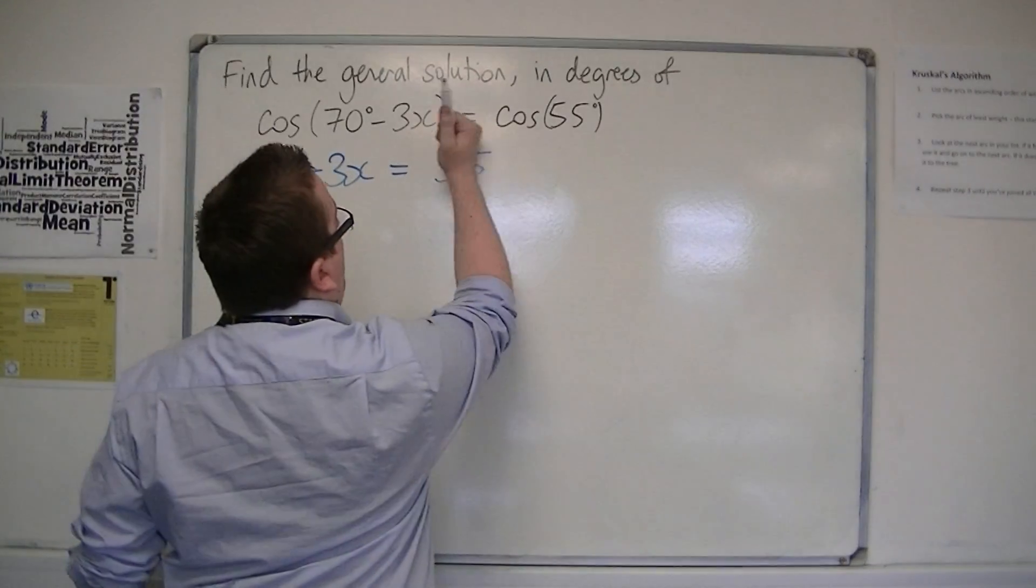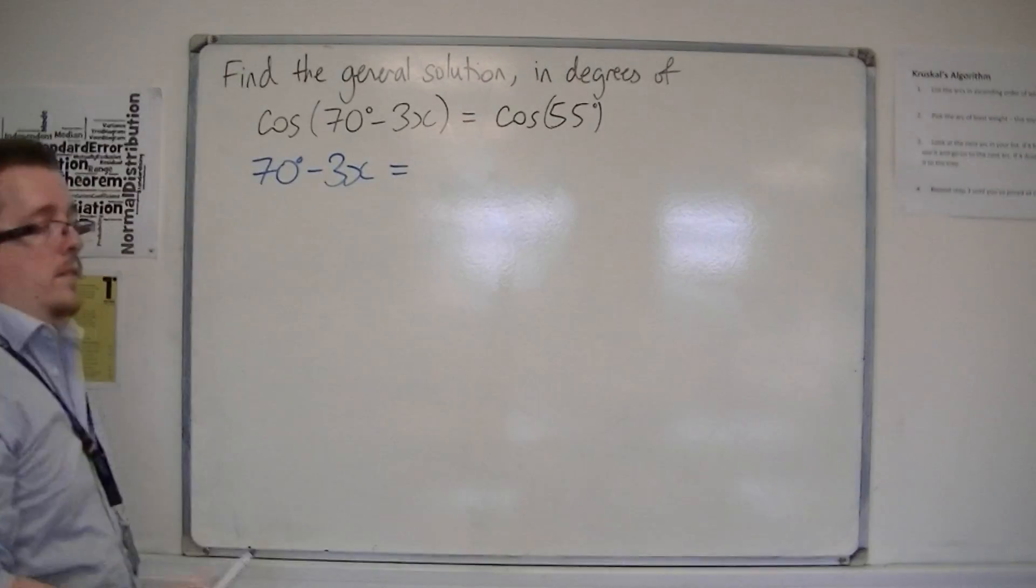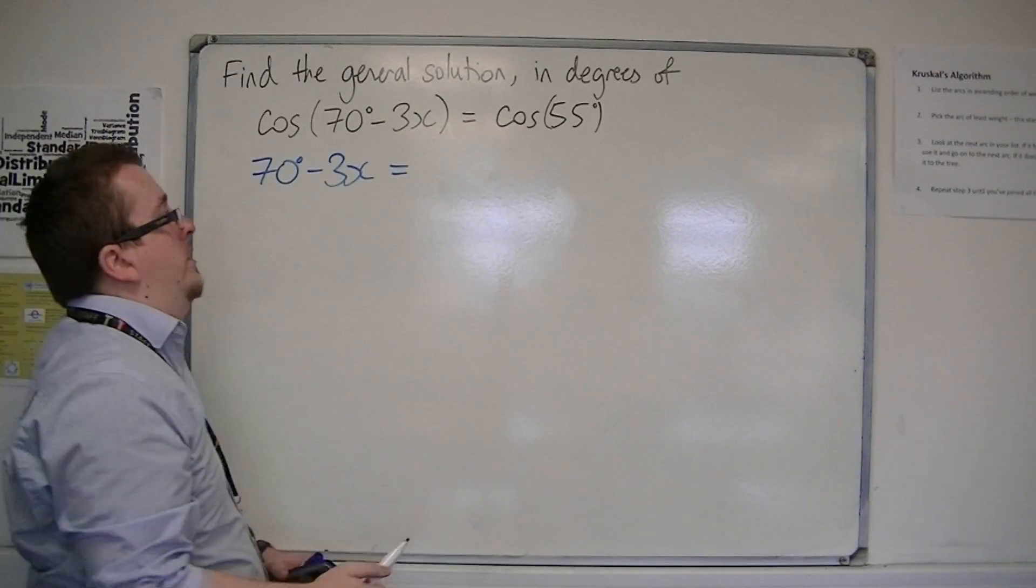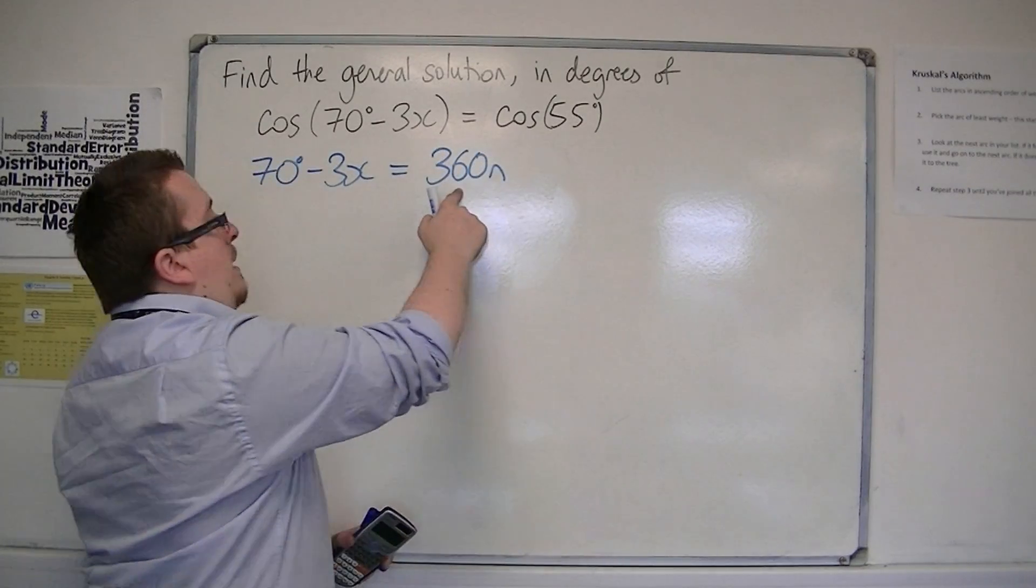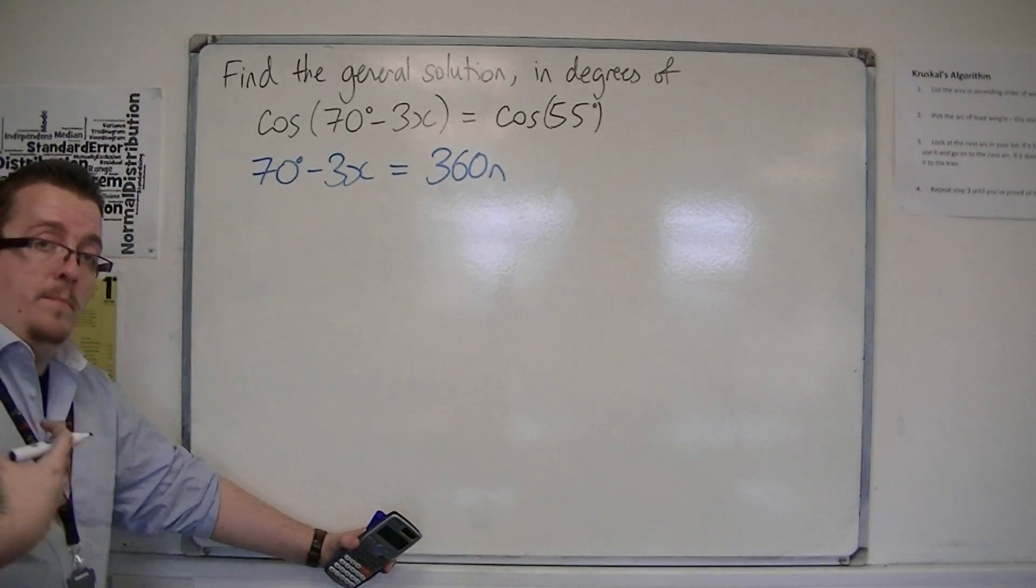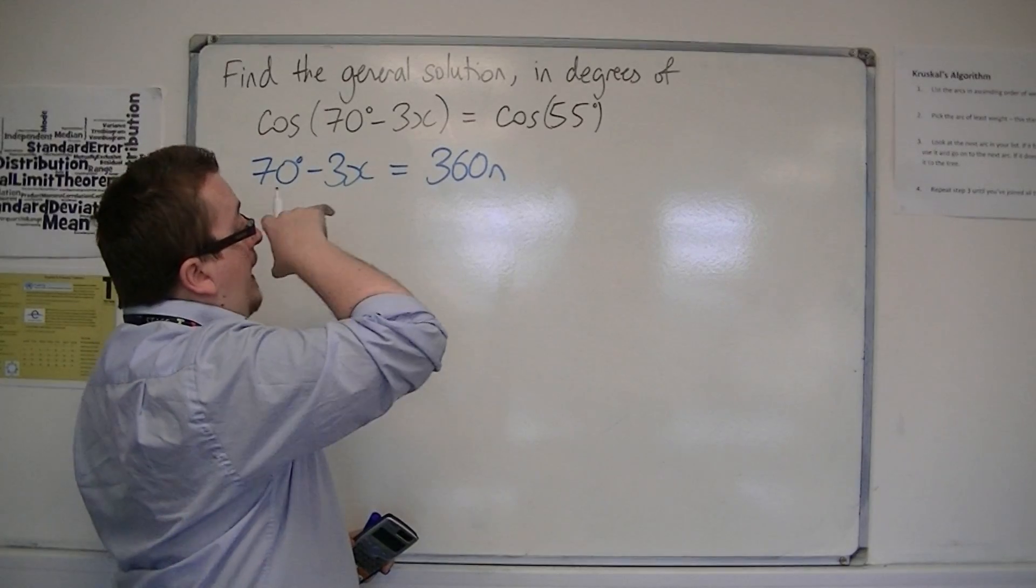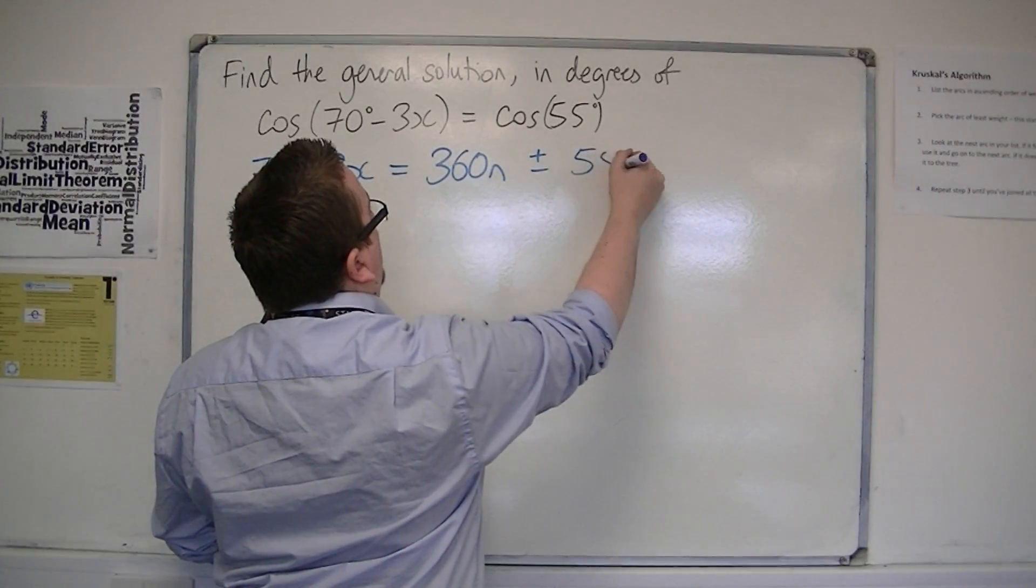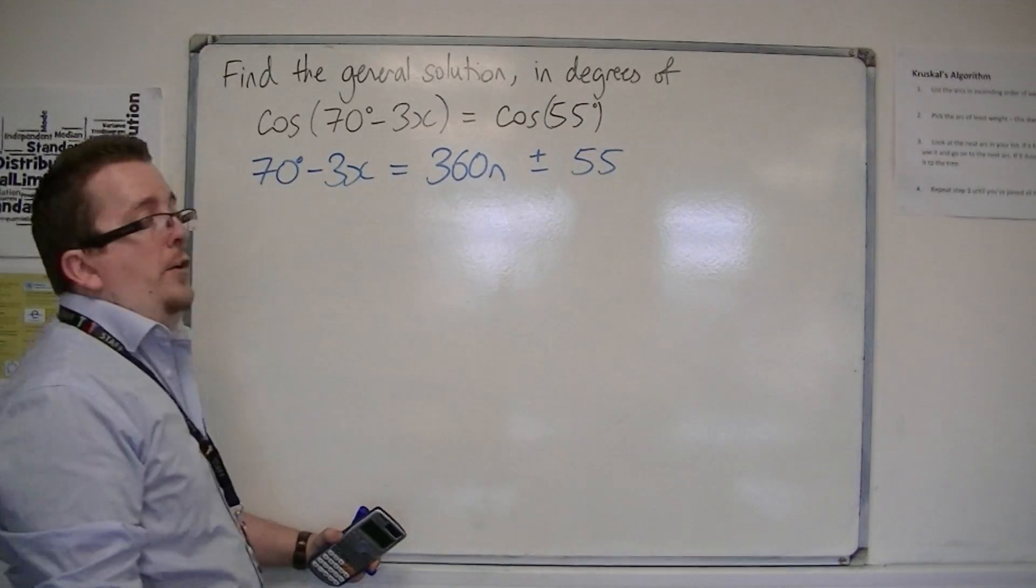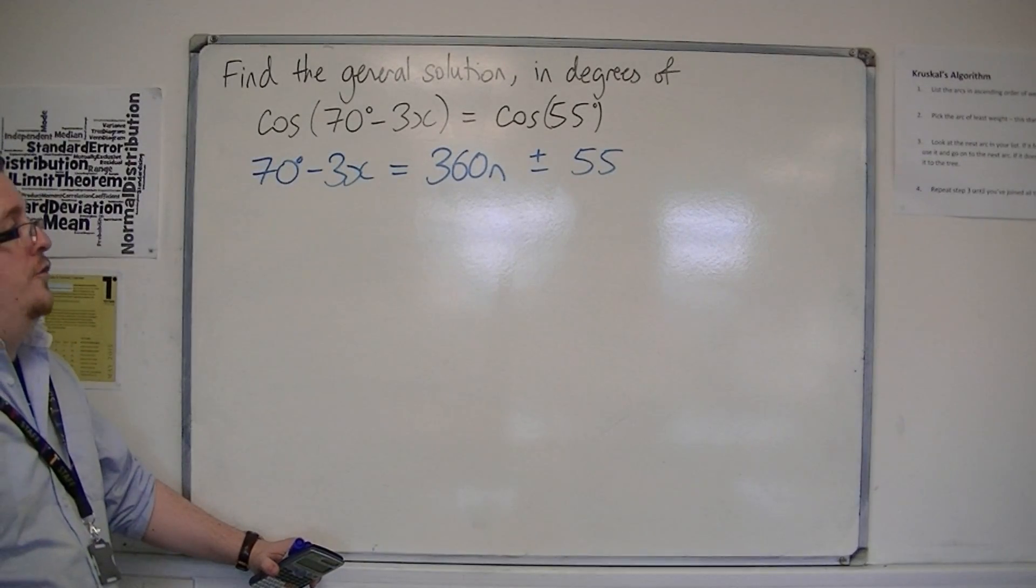But we want to introduce the general solution. So we want 360n, because remember 360 is the period of cosine in degrees, plus or minus that alpha, that inverse cosine of cos(55).